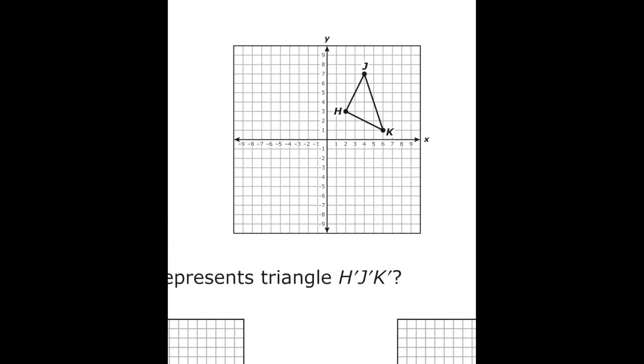So if I look at my graph I'm going to look at letter K first and its x value is six so now instead of positive six it's going to be negative six. So I'm going to graph it with the same y value, I'm just changing the x value. I'm going to do the same thing with H so its x value goes from two to negative two and then letter J goes from positive four to negative four.